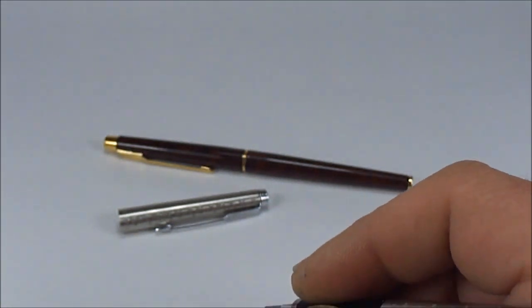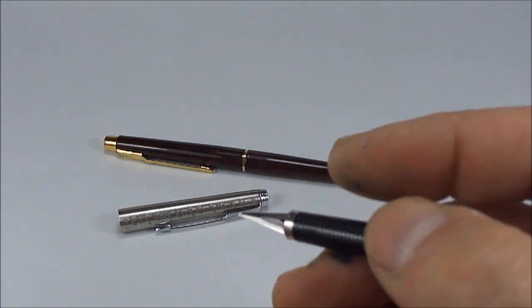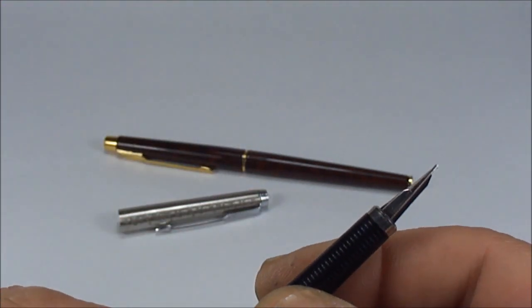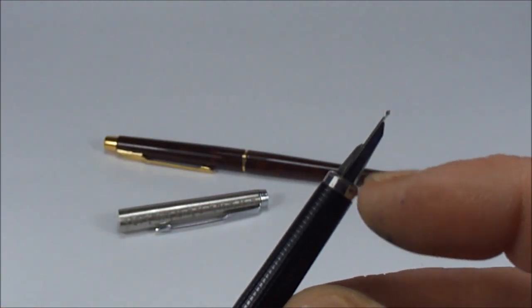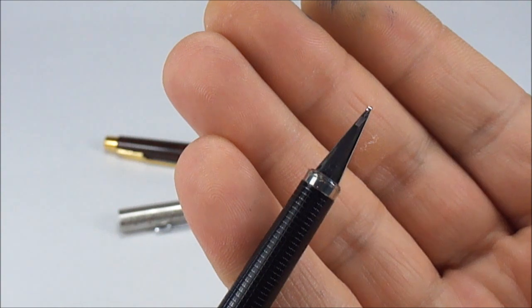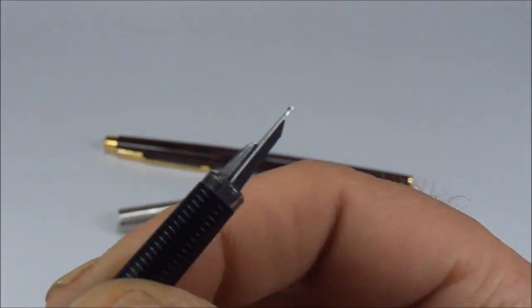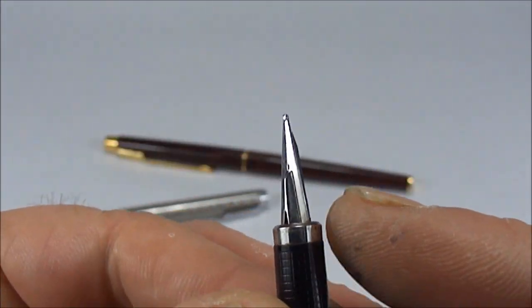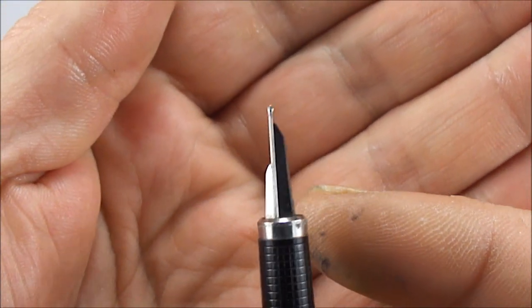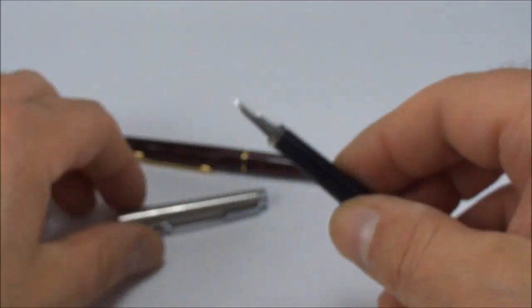The nibs came in different combinations - extra fine on one side and medium like this one, or fine and broad. This one has a stainless steel nib, though they may have made gold nibs as well. Now, the reason these two pens get confused - let me give you history on the Classic.